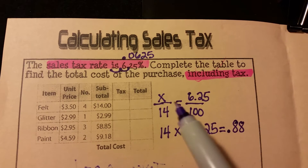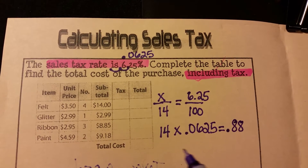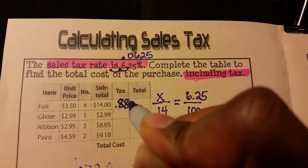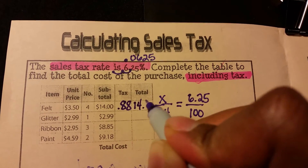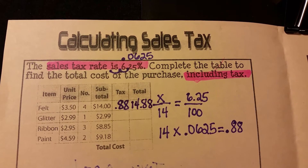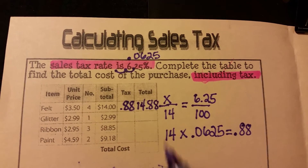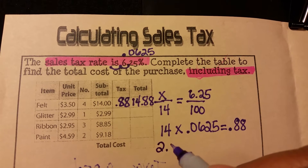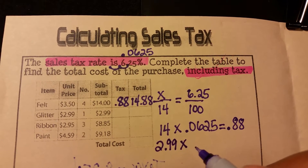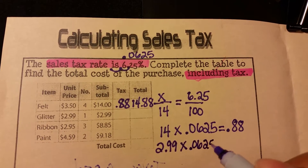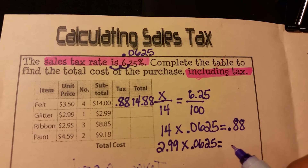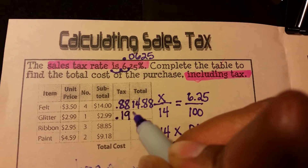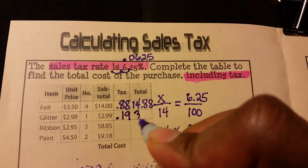We would still get 88 cents either way. We add that 88 cents back to our subtotal, so the total for felt is $14.88. For glitter, we take $2.99 and multiply it by 0.0625, which gives us 19 cents in tax. We add that to the $2.99, which gives us $3.18.